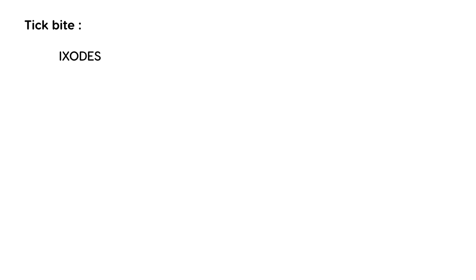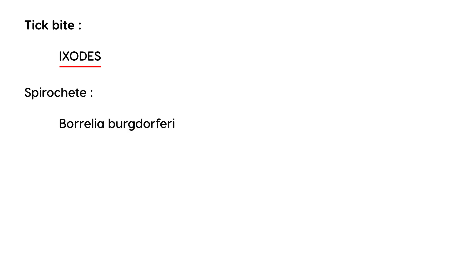You go into the woods and you get bitten by a tick. The type of tick that causes Lyme disease has a special name — it's called Ixodes. There are different types, but this is the main name. What happens is this tick then transmits an organism into your body called a spirochete, and the name of that spirochete is Borrelia burgdorferi.